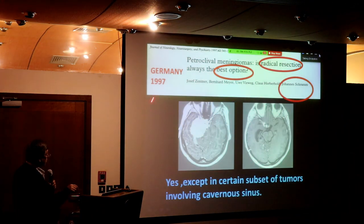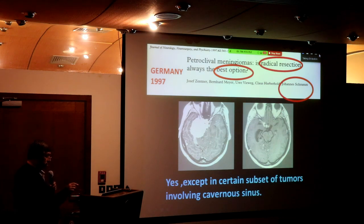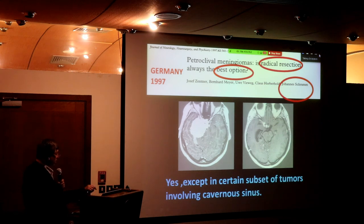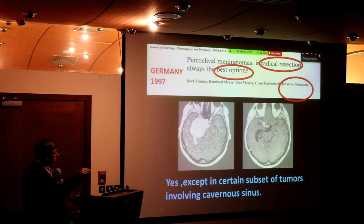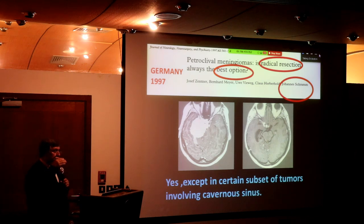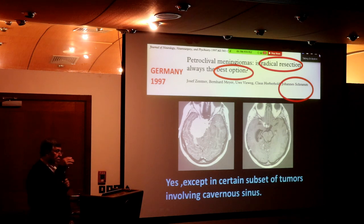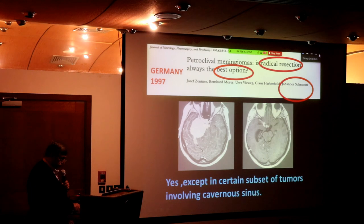Papers from Germany in 1997 by Johannes Schramm, chairman of the German Neurosurgical Society — he says radical resection is always the best option, except for tumor going into the cavernous sinus. We do not operate on meningiomas going inside the cavernous sinus, but anything else we should remove. How do you reach that area? So many approaches: retrosigmoid, petrosal approaches, translabyrinthine, transcochlear, middle fossa approaches.